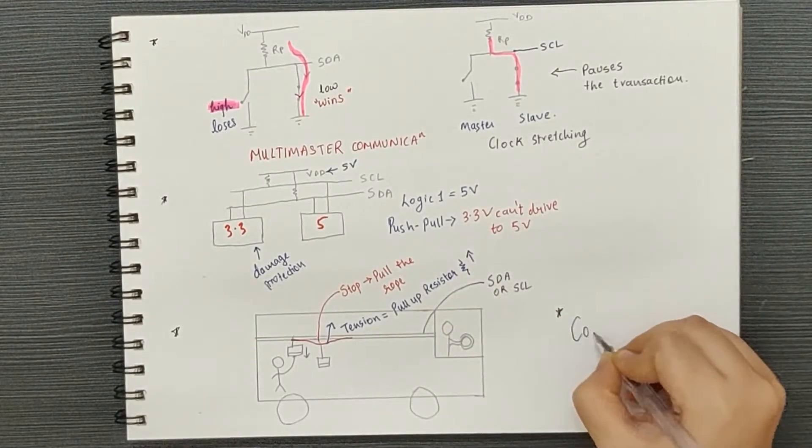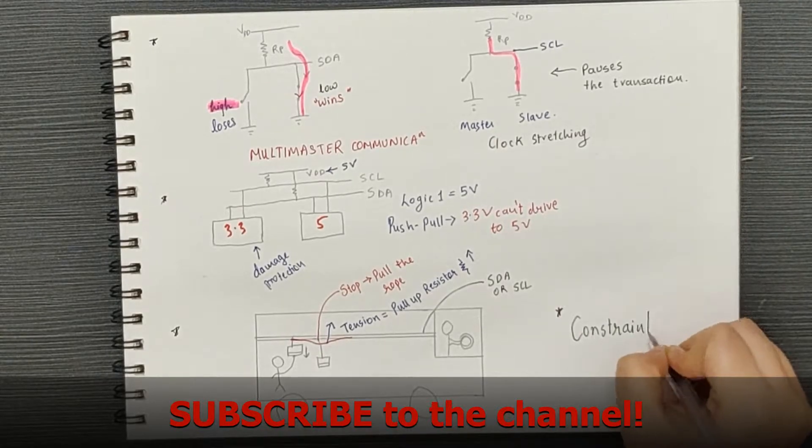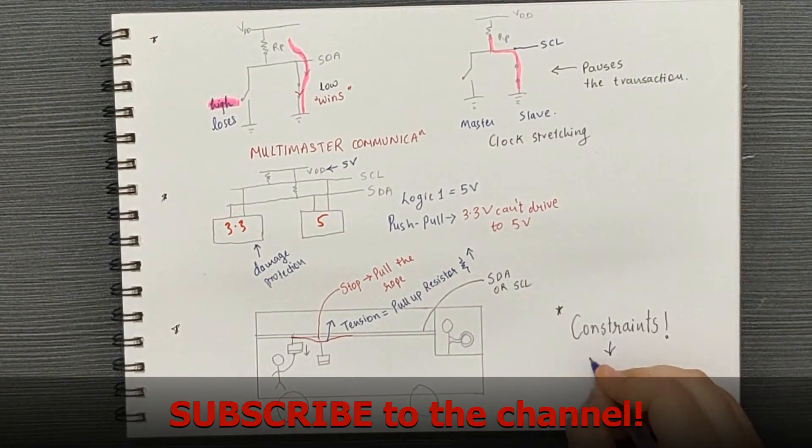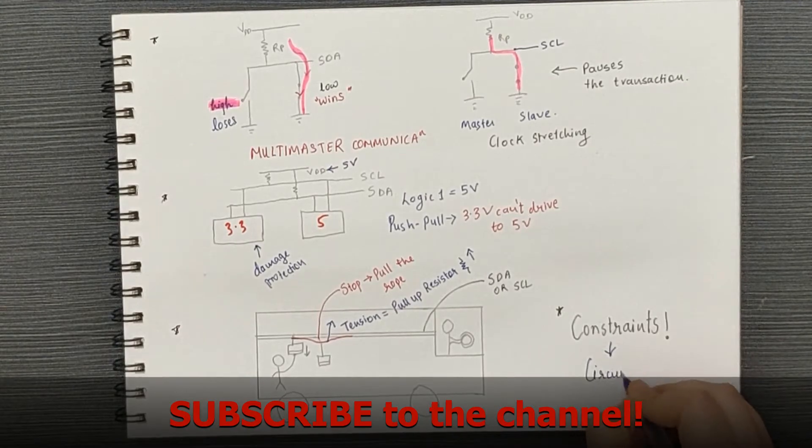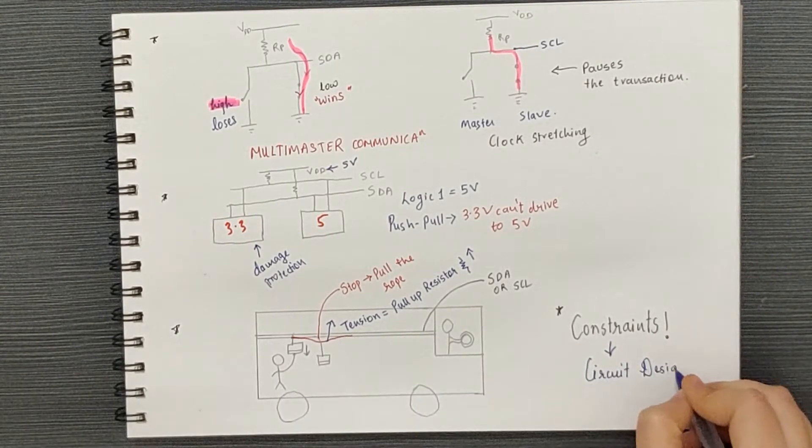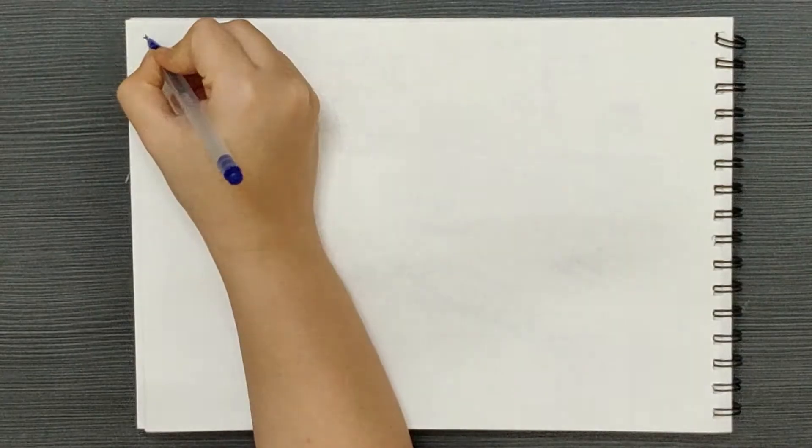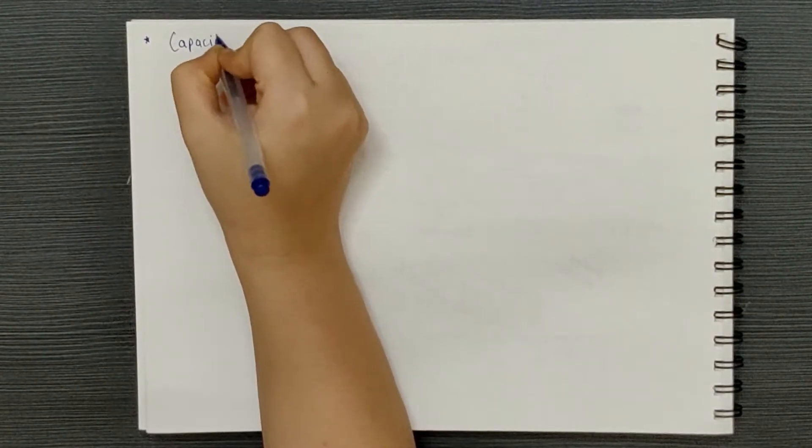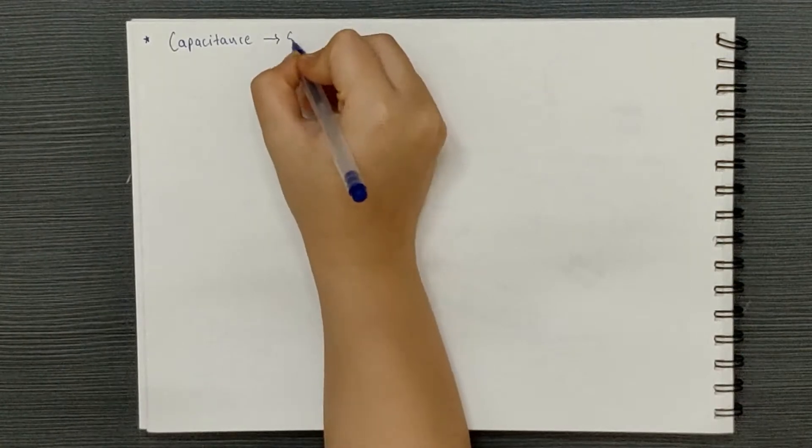Now, we've already looked at the advantages associated with the open drain configuration. Let's understand the constraints and how we can take these into account while designing the circuit. Now,